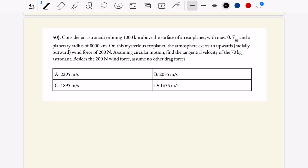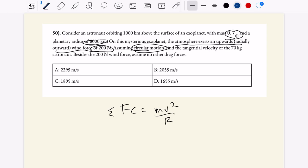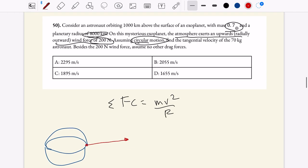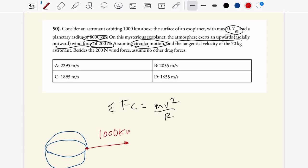Next question. For this question, we're considering an astronaut orbiting 1,000 kilometers over the surface of an exoplanet. We have some exoplanet parameters of mass and its radius, and then we also have an upward radially outward wind force of 200 newtons. And we're going to consider circular motion. So this is a classic physics problem. You have that fc equals mv squared over r. Let's write net. So we'll examine this question, but before we do that, let's draw a quick picture. So we have an exoplanet right there, and then we have some astronaut orbiting.